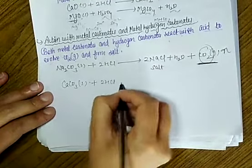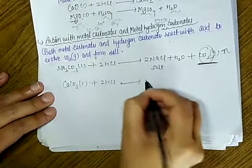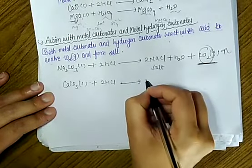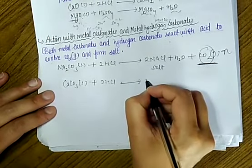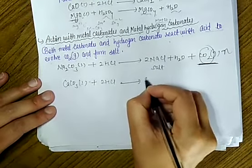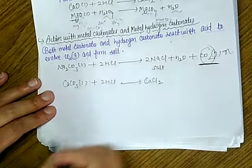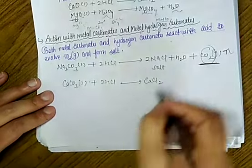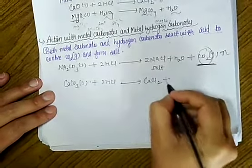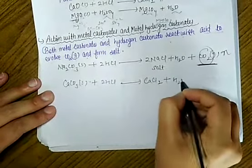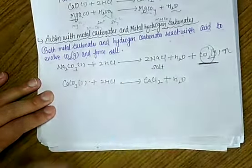For example, calcium carbonate — this is your main example. If you react CaCO₃ with HCl, then what will form? CaCl₂ (calcium chloride) plus H₂O, which will be released.